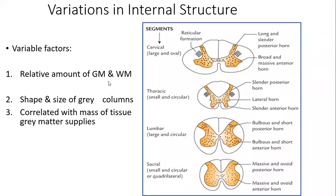Those variable factors include the relative amount of gray matter and white matter — that is, the proportion to each other as well as at different segments of the spinal cord. They can be variable in amount. The shape and size of the gray columns — that is, the dorsal and anterior columns — may be of variable sizes at different levels, because of the mass of tissue that gray matter has to supply.